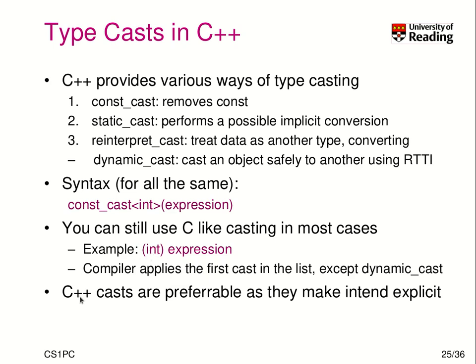Generally, it's good practice to use the C++ named casts because they make the intent explicit. It's clear whether you want to remove const, perform an implicit or explicit conversion without changing meaning, or reinterpret the bits in the data type.